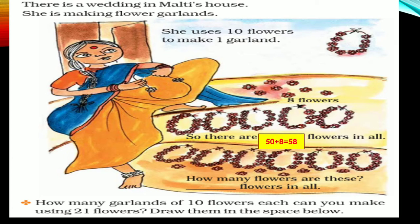In the second set, how many garlands? 1, 2, 3, 4, 5, 6. 6 garlands. And how many loose? 1, 2, 3, 4, 5, 6, 7. 60 and 7 make 67.